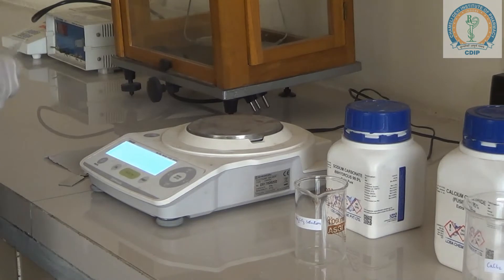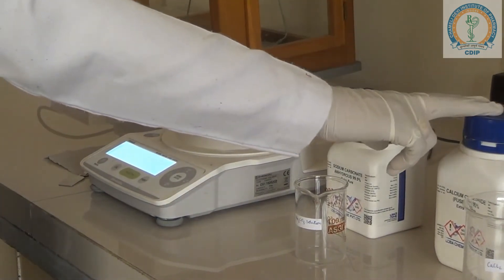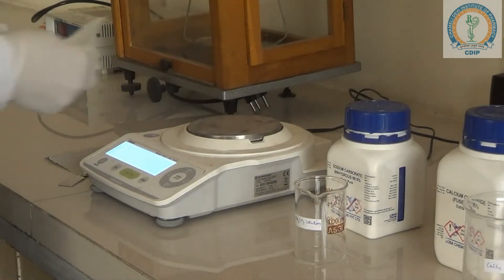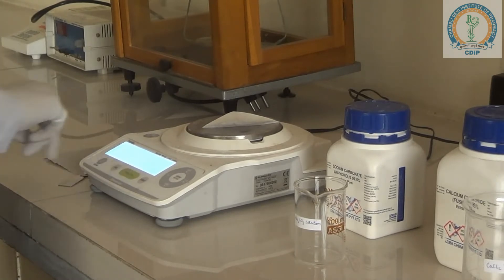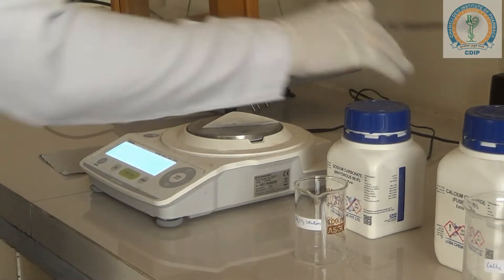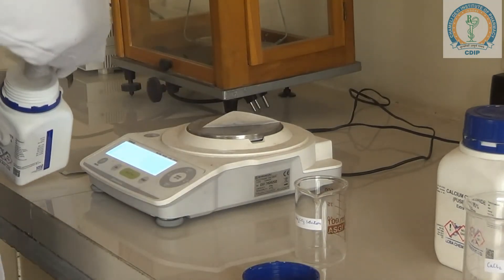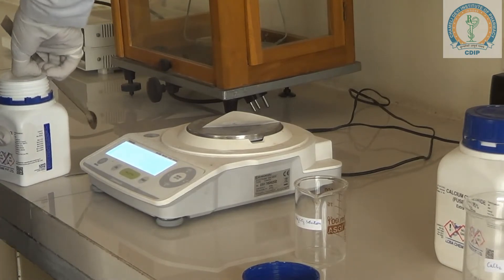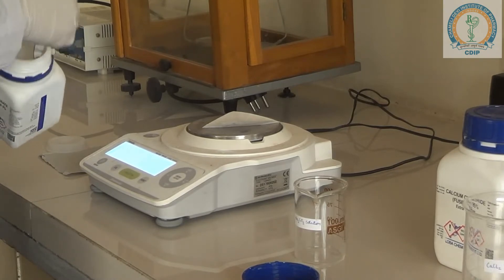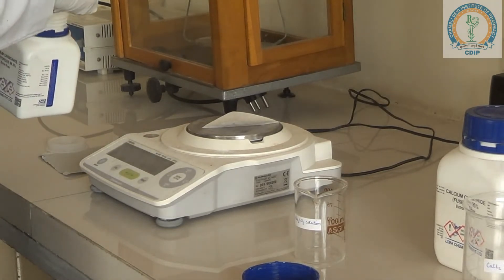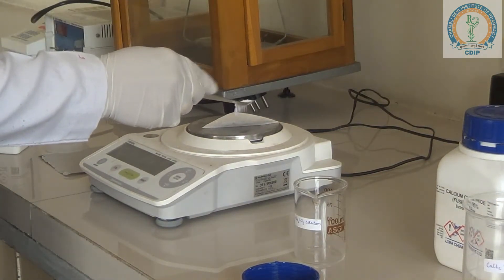Now, for the preparation of calcium carbonate, we first take sodium carbonate 1 gram and calcium chloride 1 gram. So we are weighing this. We are taking here 1 gram of sodium carbonate.